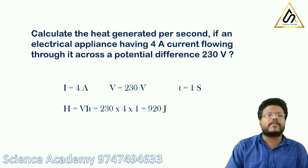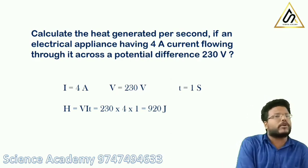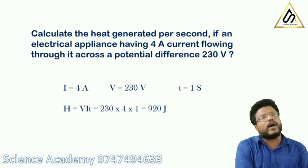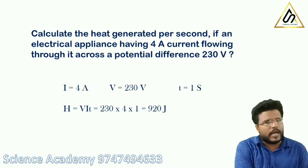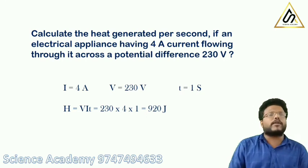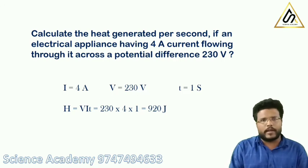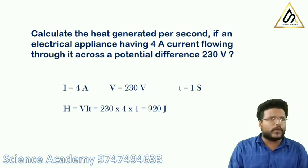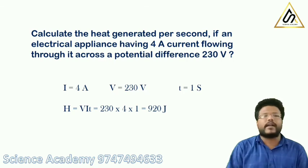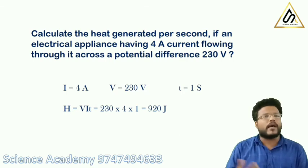We have discussed three forms of the heat equation: H equals I squared R, H equals V I T, and since V equals I R, these are the alternate forms using current, voltage, and resistance.